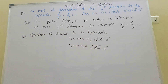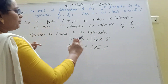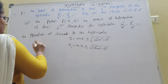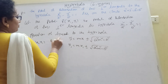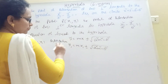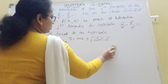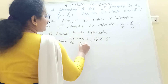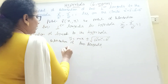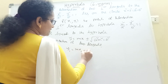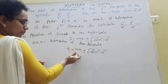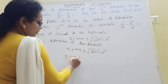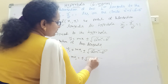That point lies on the hyperbola. Let the point P of x₁, y₁ be a point on the intersection of two tangents. Okay. Now apply: y₁ equal to m into x₁ plus or minus root of a²m² minus b². Now bring mx₁ to the other side. Then y₁ minus mx₁ equal to plus or minus root of a²m² minus b².